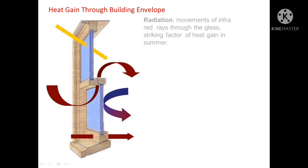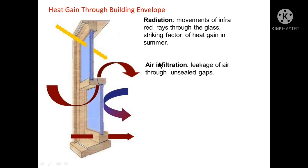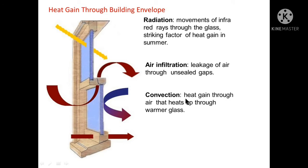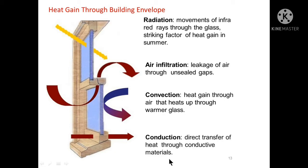The heat gain through building envelopes can be shown in four ways. First is radiation — movement of infrared rays through the glass, which is the main factor of heat gain in summers. Next is air infiltration, that is leakage of air through unsealed gaps. Next is convection — heat gain through air that heats up through warmer glass. Last is conduction, that is direct transfer of heat through conductive materials.